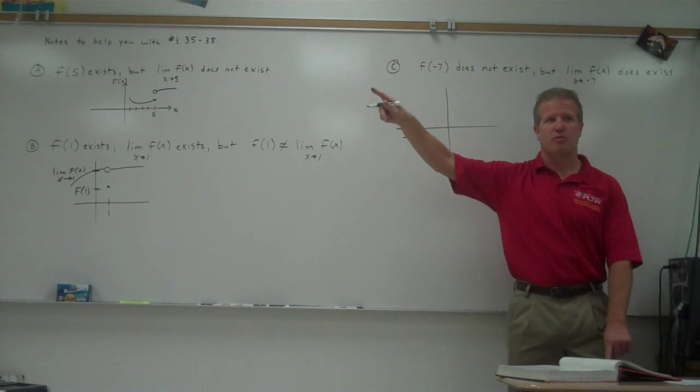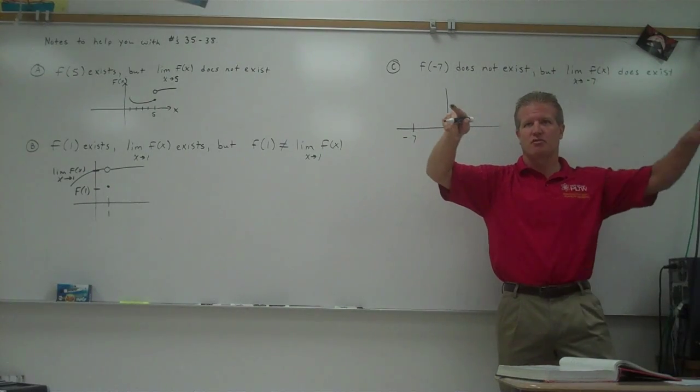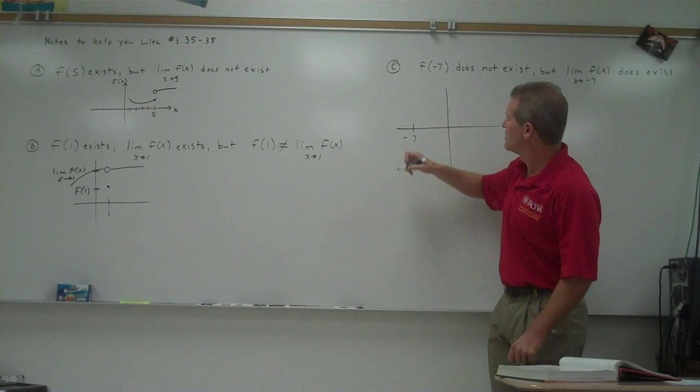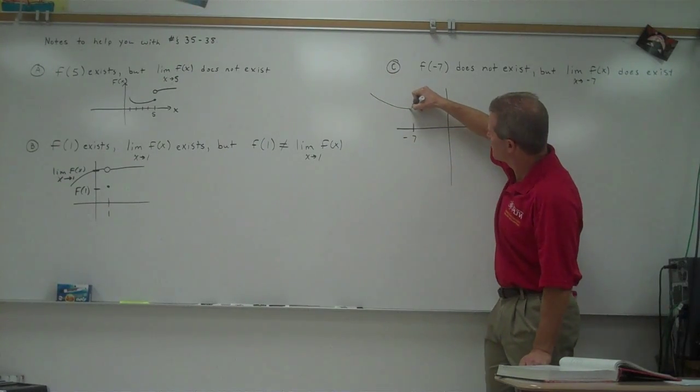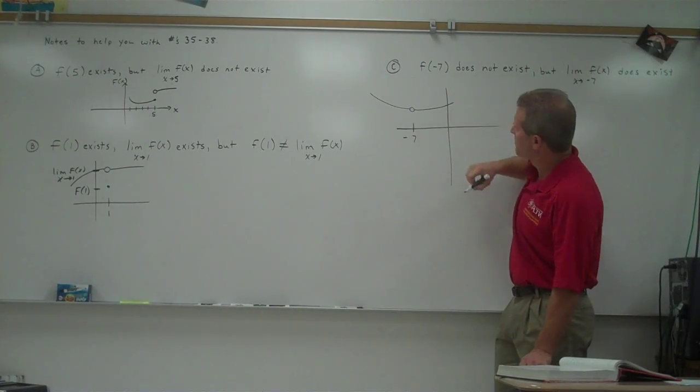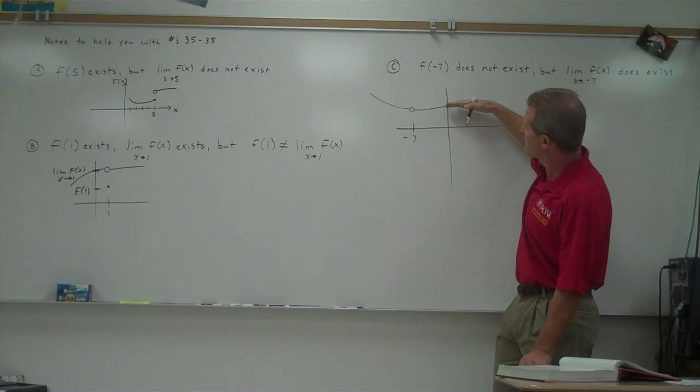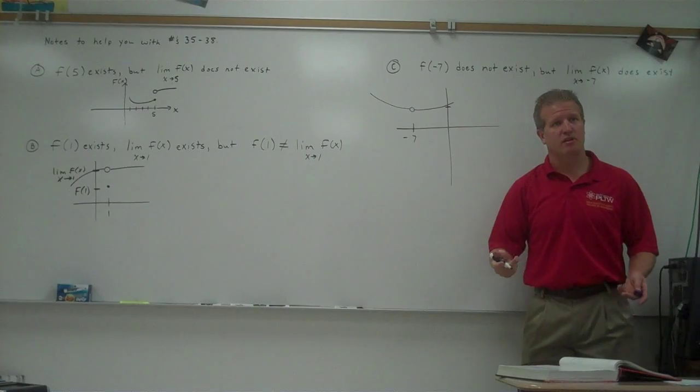So if the limit exists, that means as I approach negative 7 from the left, I approach from the right, I have to be coming towards the same y-coordinate. So it might look something like this, for example. The limit would exist. In fact, the limit would be this y-coordinate right there. That would be my limit. But f of negative 7 would not exist. So there's no point there. So the limit can exist even though there's no point at that particular x-value.